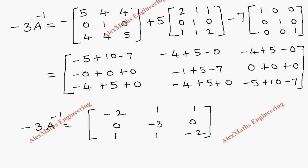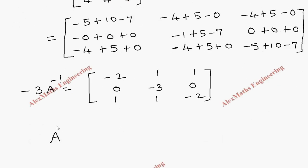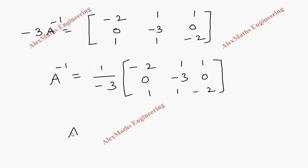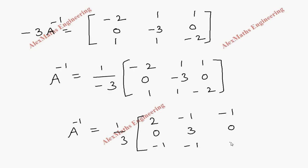We divide everything by minus 3. So A inverse equals 1 over minus 3 times the matrix: minus 2, 1, 1; 0, minus 3, 0; 1, 1, minus 2. We can keep 1 over 3 outside and change all signs, giving A inverse equals 1 over 3 times: 2, minus 1, minus 1; 0, 3, 0; minus 1, minus 1, 2. So we got A inverse.